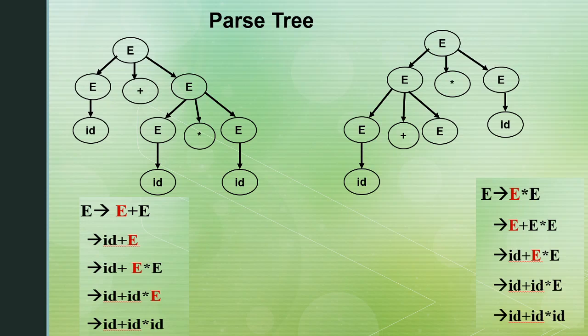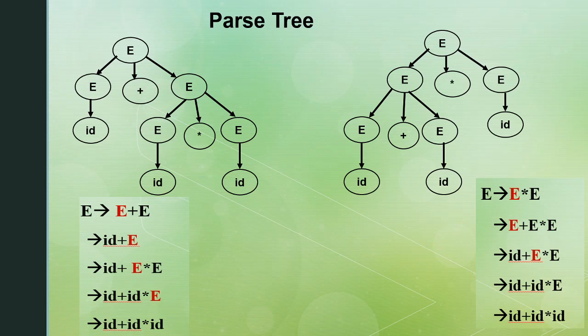In the last step, id is substituted. Now check these two parse trees — they are different. One uses E plus E at the root and the other uses E star E at the root, showing differences at each step. This parse tree difference means this is an ambiguous grammar.